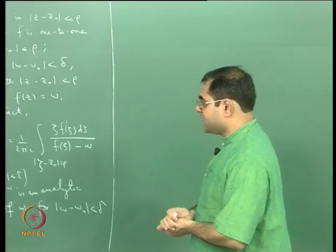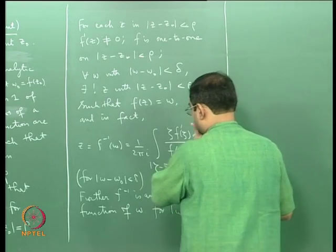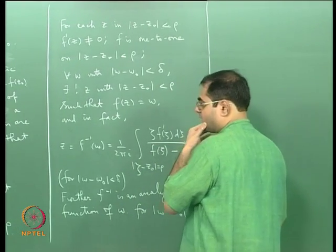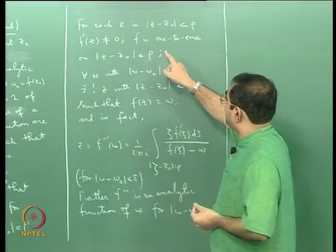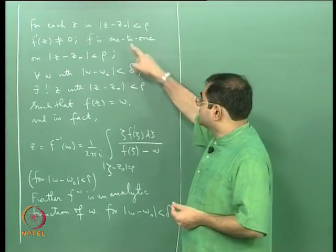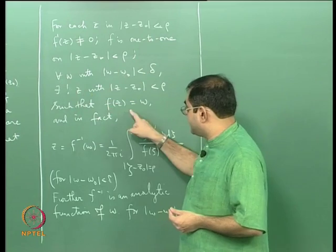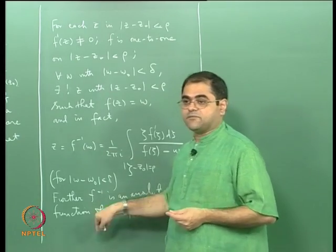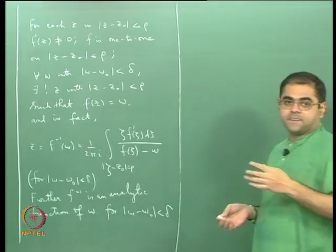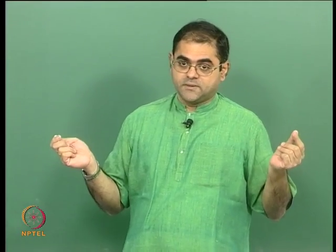Let us now prove this. There are three things to prove: first, show f is one-to-one; second, show the inverse function is given by the stated formula; third, show f⁻¹ is analytic as a function of w. To show it is one-to-one, we go back essentially to the proof of the open mapping theorem.